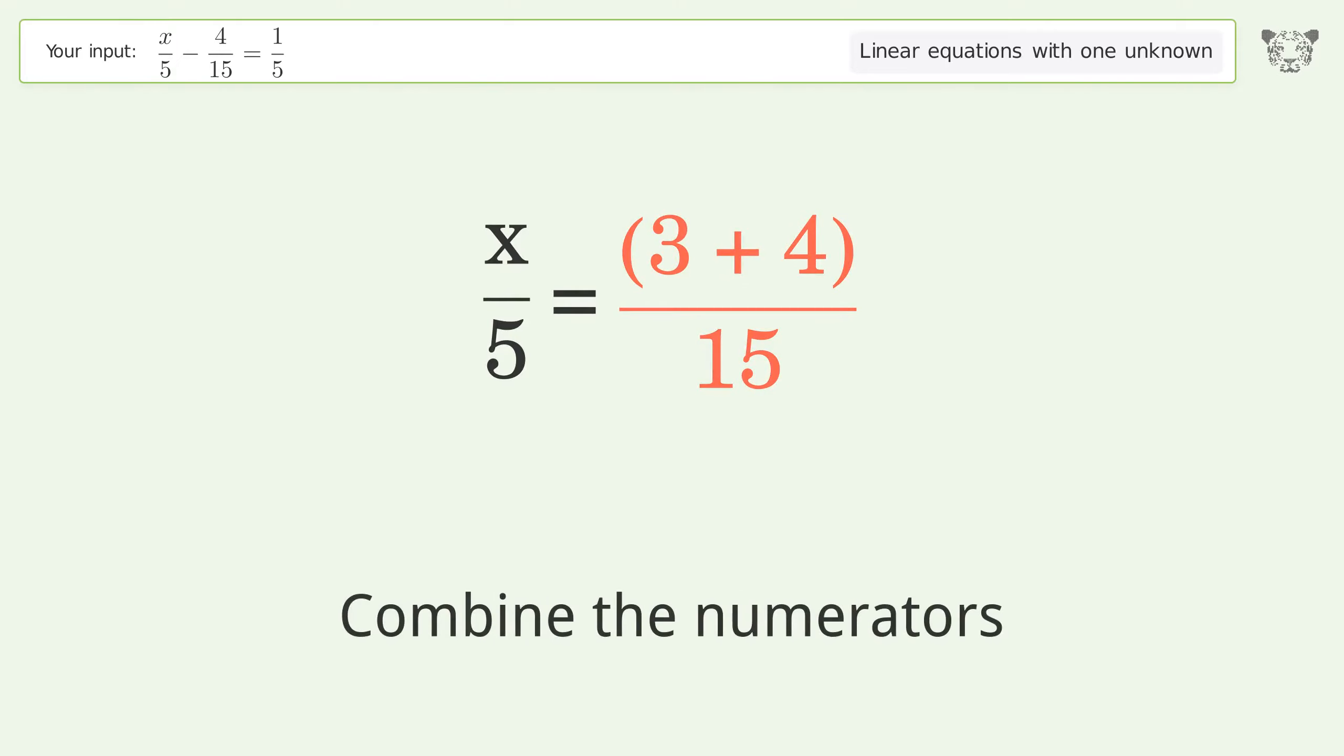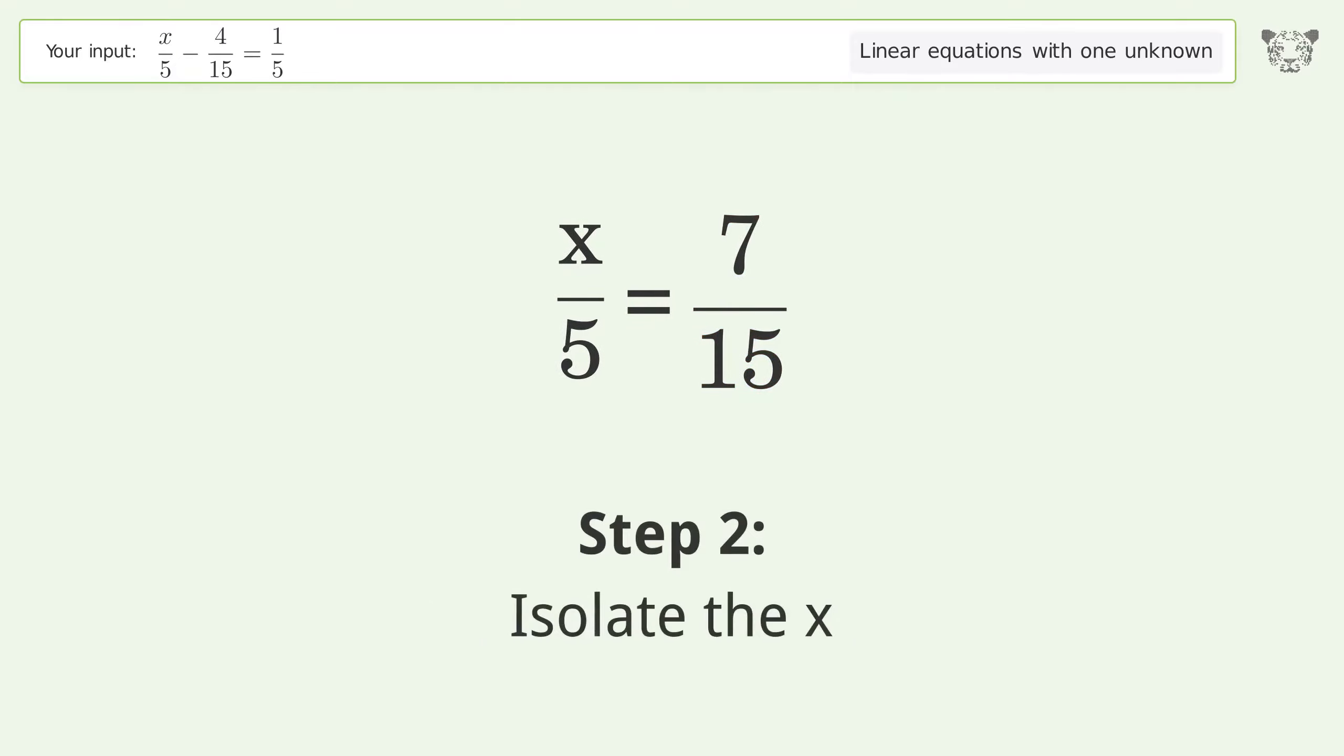Combine the numerators. Isolate the x. Multiply both sides by 5.